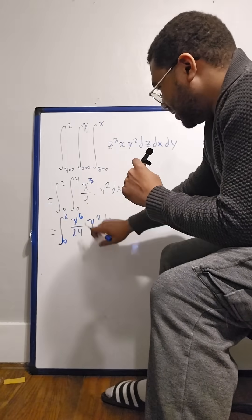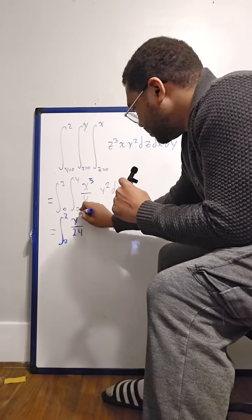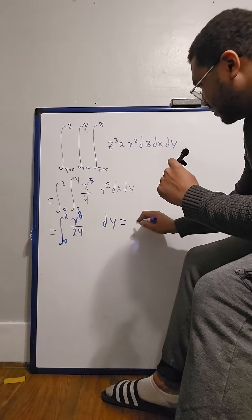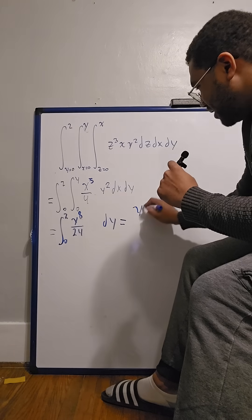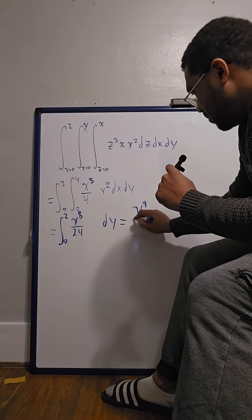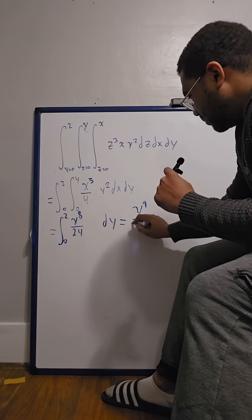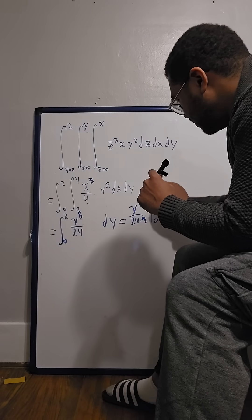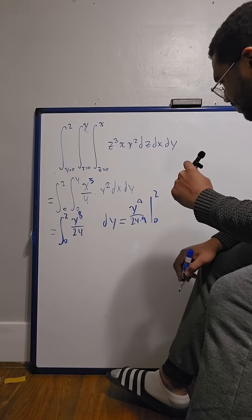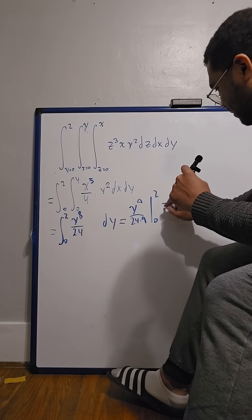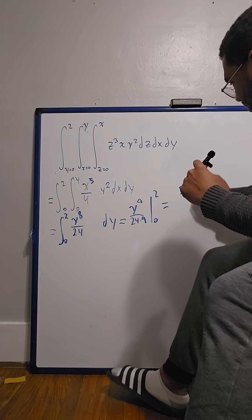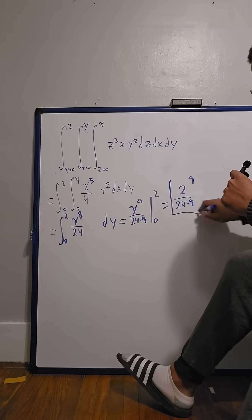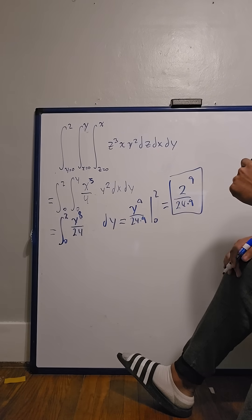This can now be a y to the 8th. So this finally gives us y to the 9th over 24 times 9, from 0 to 2. This gives us a final answer of 2 to the 9th over 24 times 9. You can simplify, but that's our answer.